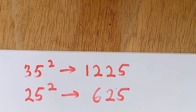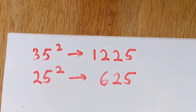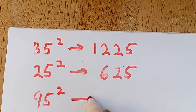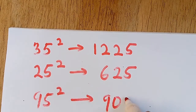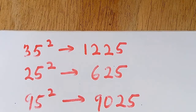Let me take another example, and then I will explain how I came out with these answers in less than two seconds. So let's take 95 squared — in less than two seconds the answer is 9025. Someone asked me how I'm able to get these answers within just a few seconds.